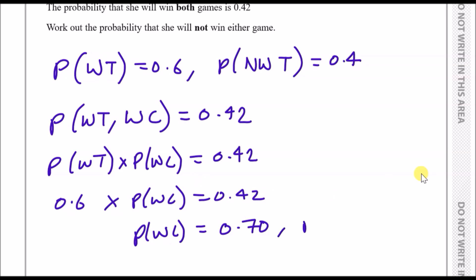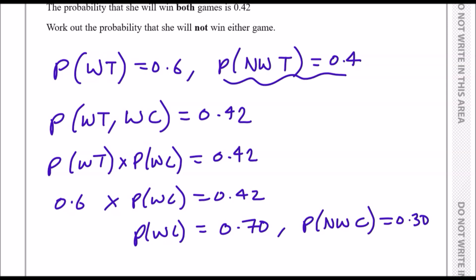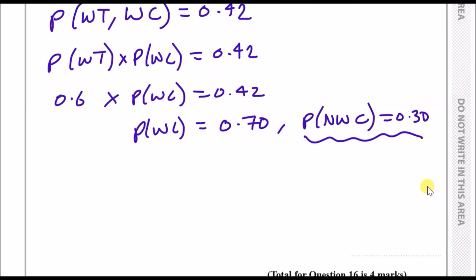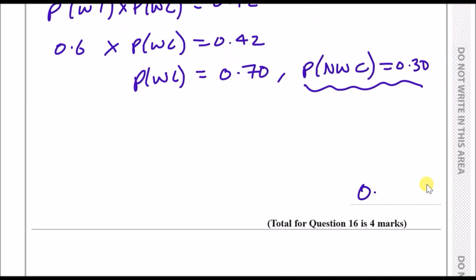The probability that she does not win chess is 0.3. The question asks for the probability that she will not win either game. The probability she doesn't win tennis is 0.4, and the probability she doesn't win chess is 0.3. Multiplying 0.4 by 0.3 gives us the answer of 0.12.